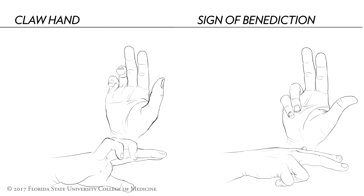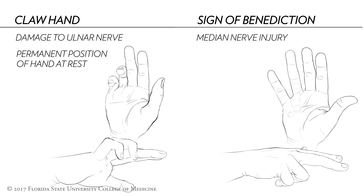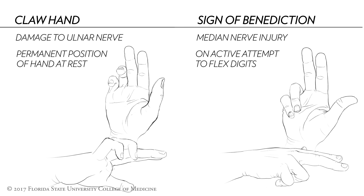Obviously, claw hand and the sign of benediction look very similar. While there are subtle anatomical differences between these two signs, the most important thing to remember is that claw hand results from damage to the ulnar nerve and is the permanent, fixed position of the hand at rest. In contrast, the sign of benediction is the result of median nerve injury and is seen only during an active attempt to flex the digits. When the hand is relaxed, the clawed appearance goes away.